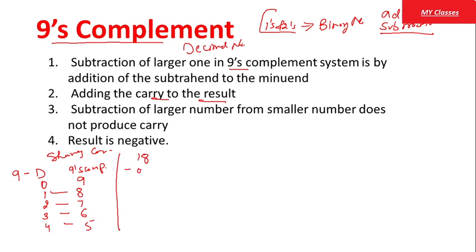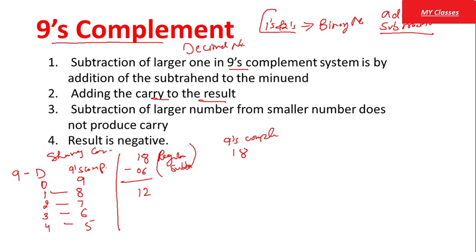Example लेते हैं — जैसे general method से 18 में से 6 minus करें तो answer आना चाहिए 12। यह है regular subtraction का method। अब हम यही 9's Complement के through करेंगे। 18 as it is रहेगा। अब हमें जिस number को हम subtract कर रहे हैं, उसका 9's Complement find out करना होता है।